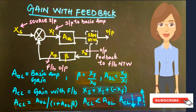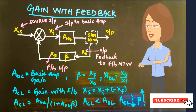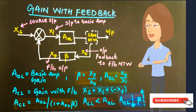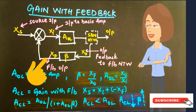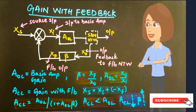The gain with feedback, ACL, is always less than the gain without feedback, AOL, of a basic amplifier by a factor of (1 + AOL·β). This happens because of the negative injection of the feedback signal XF into the basic amplifier. ACL is always dependent upon β, which is the feedback ratio — that is XF divided by X-naught — and as β increases, ACL decreases.